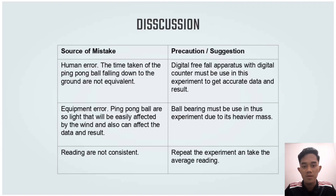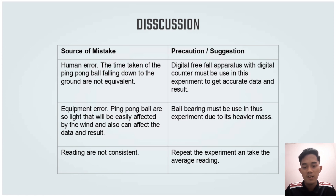My name is Nick Haitembe Roziha and I will discuss the sources of error. First, human error: the time taken for the ping pong ball falling was not consistent. Suggestion: use digital free-fall apparatus with a digital counter. Second, equipment error: the ping pong ball is too light and easily affected by wind. Suggestion: use a ball bearing due to its heavier mass. Third, inconsistent readings. Suggestion: repeat the experiment and take the average reading.